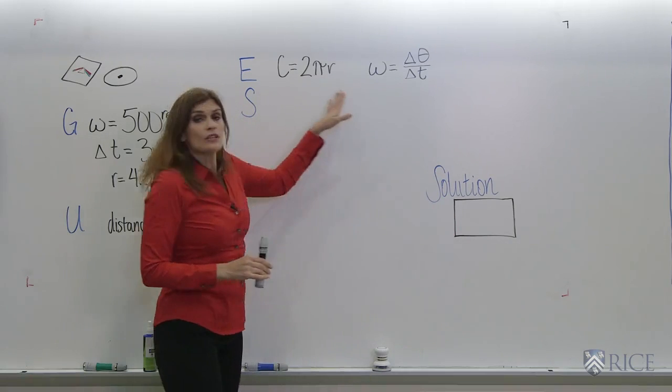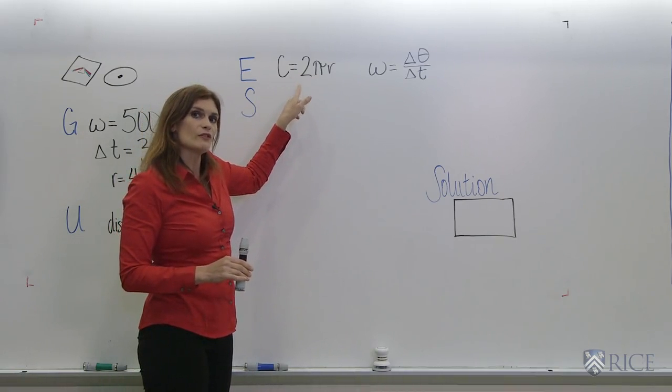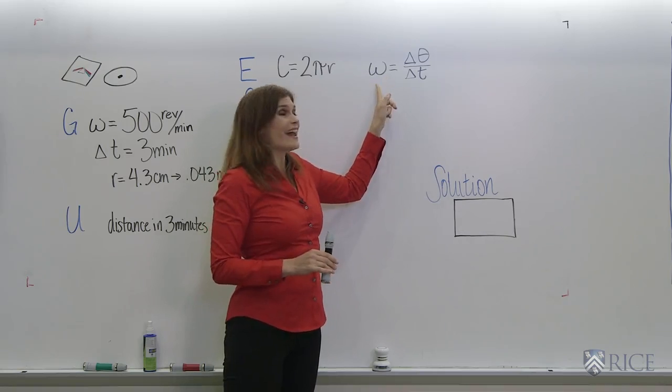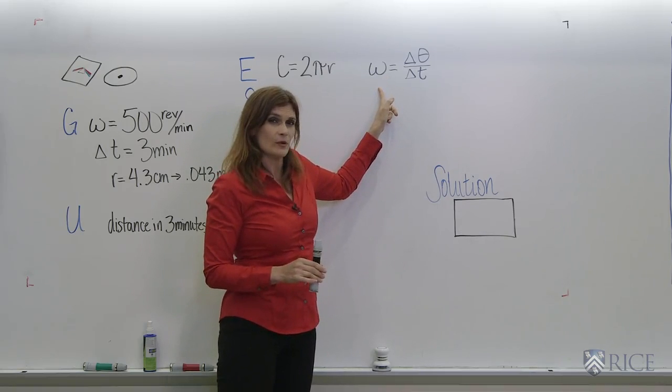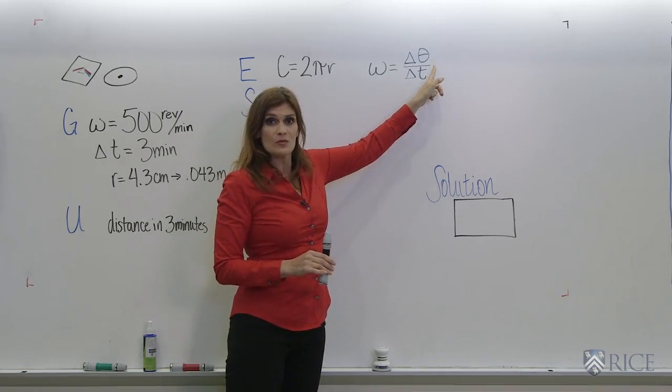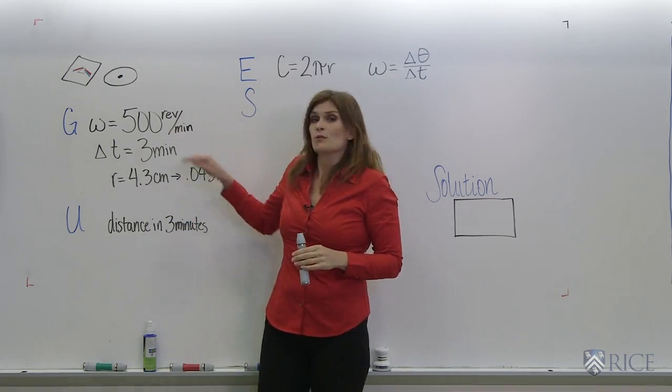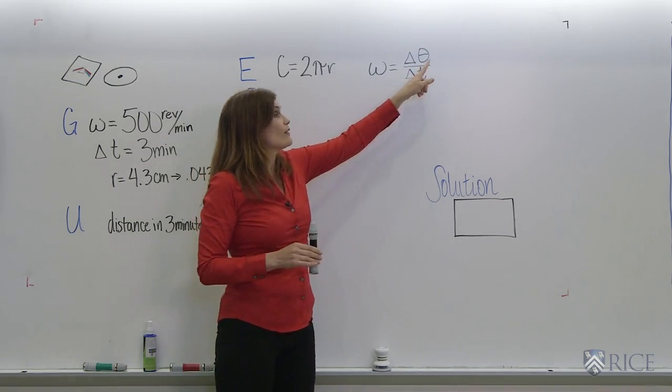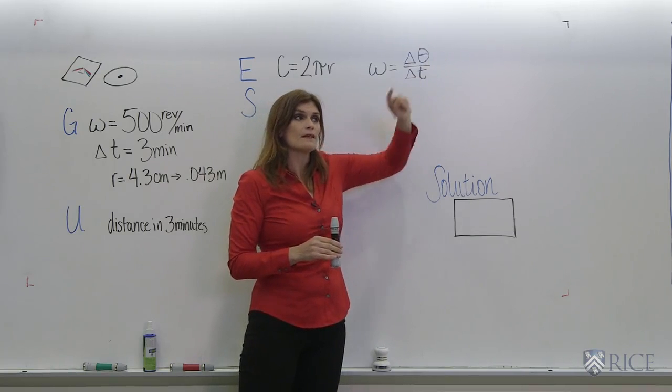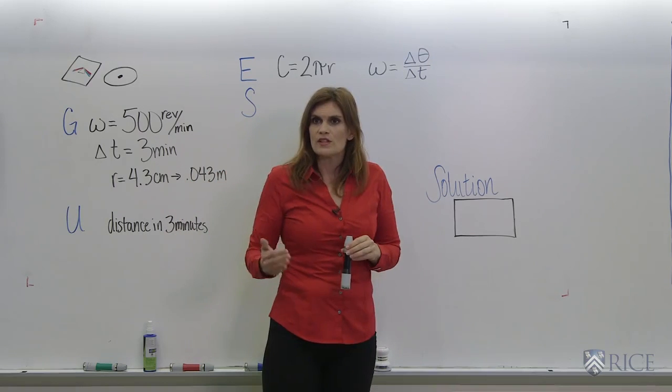So we write down our equations, and I'll have these ready for you. We need the equation for circumference, and we also need this new equation for angular velocity that looks remarkably like linear velocity, but with different symbols. So angular velocity is angular displacement over time. Now, if your angular velocity is in revolutions per minute, you can get revolutions as your angular displacement, but your standard units are going to be radians. So let's figure out what's going on.